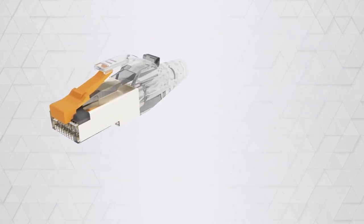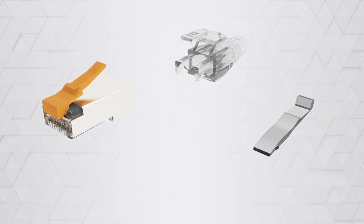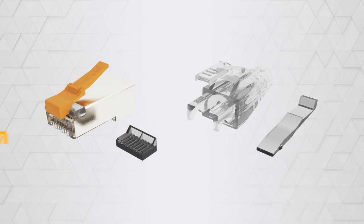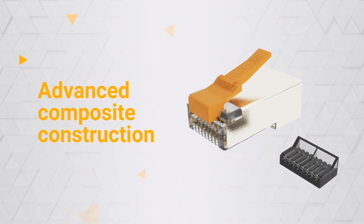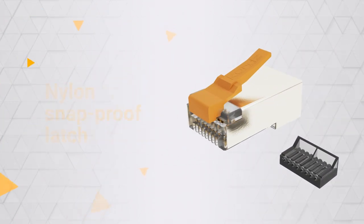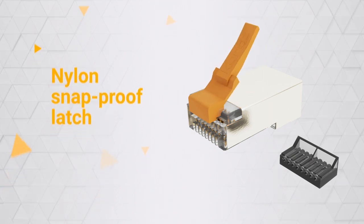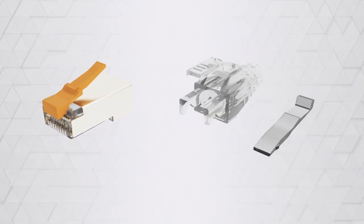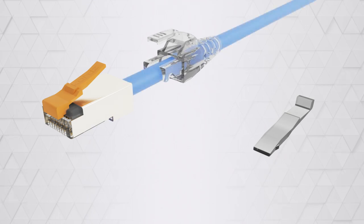The PRS SlimCat RJ45 shielded crimp connector features an advanced composite construction with a nylon snap-proof latch for reliable connectivity. An optional locking pin adds extra security to mission-critical network connections, preventing accidental disconnection.